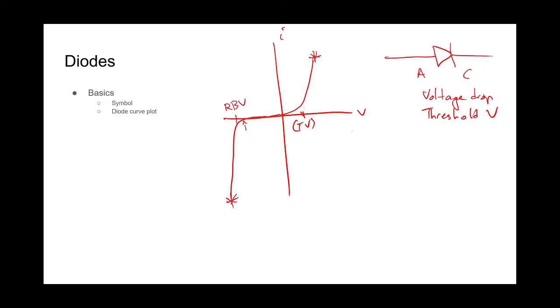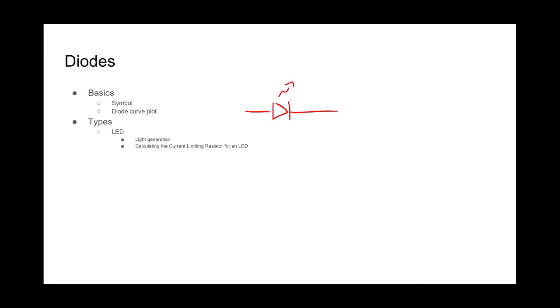Now that we have this nice plot, let's talk about types of diodes. The first one is everybody's favorite — an LED. The symbol for an LED is just a diode with little light rays coming off of it. It generates light with a current. The amount of light it gives off is relative to the current. For most LEDs, the optimal range is between 5 to 20 milliamps. Anything less than 5 milliamps is going to be kind of dim. Anything greater than 20 milliamps isn't going to appreciably increase the light output, but it will shorten the lifespan of the diode.